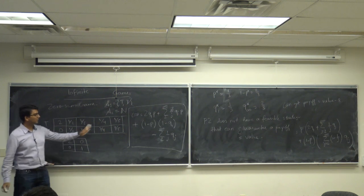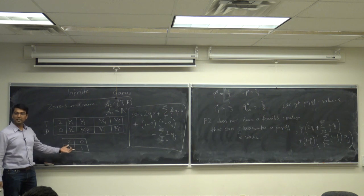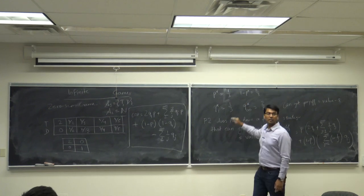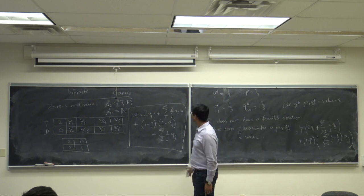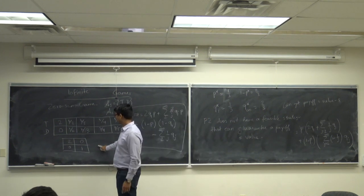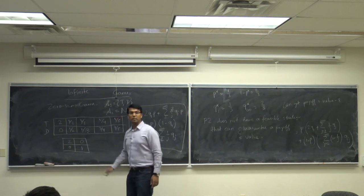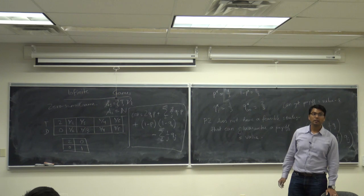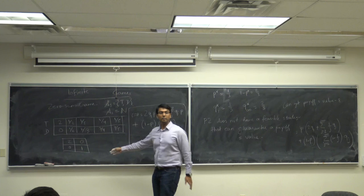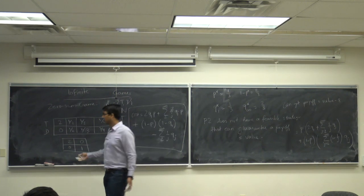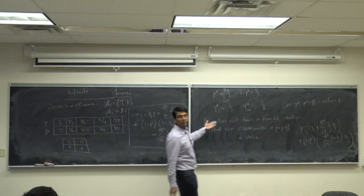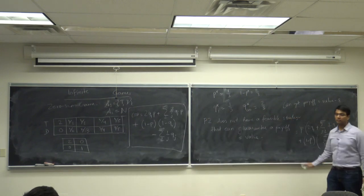If we look at just the first and last columns of the payoff matrix, this looks like a neutralizing strategy for the players — similar to the Battle of Sexes, though that was non-zero-sum and this is zero-sum. The equilibrium strategy here is similar because it is neutralizing.